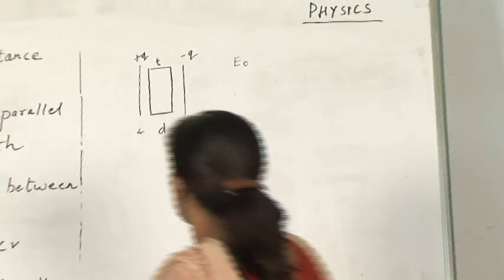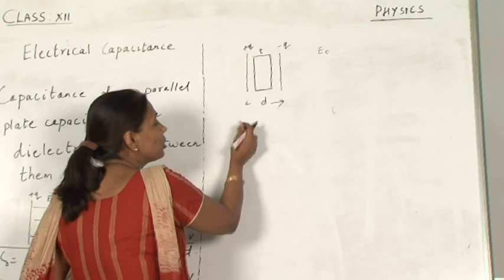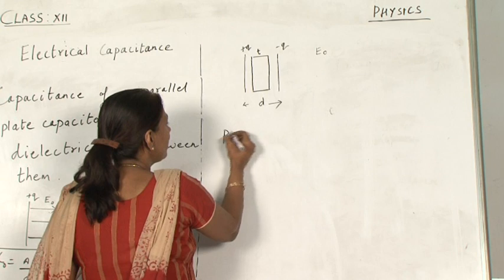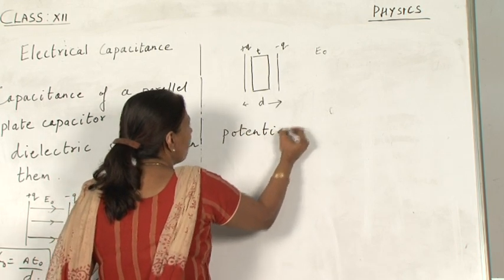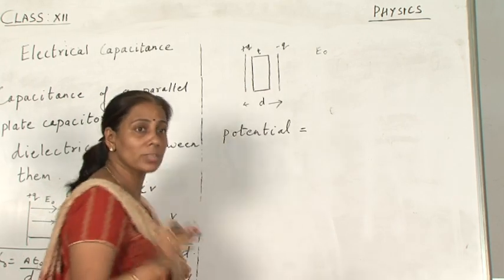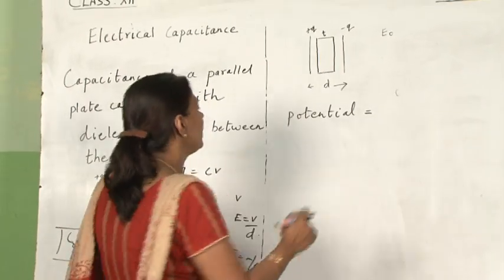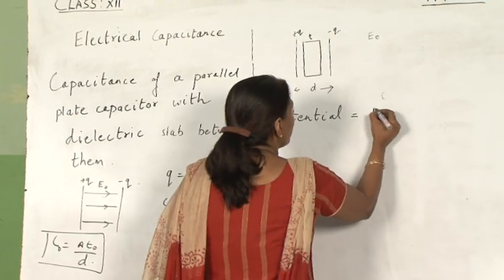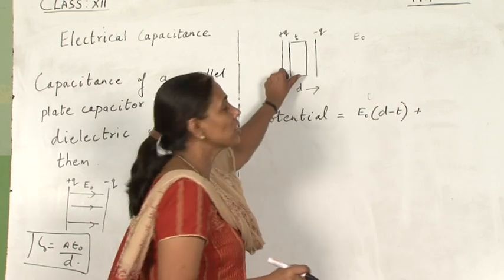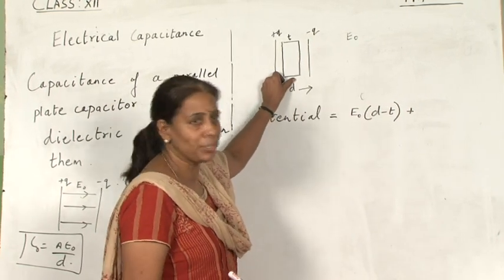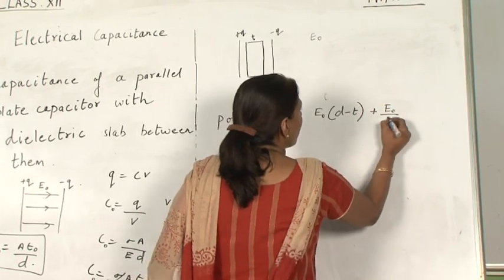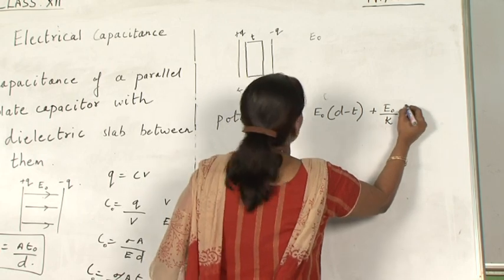So let us find out the potential. The potential will be found for both regions. The potential will be equal to E naught into D minus T for the region without the dielectric slab, plus in the dielectric region, the value will be equal to E naught by K into T.